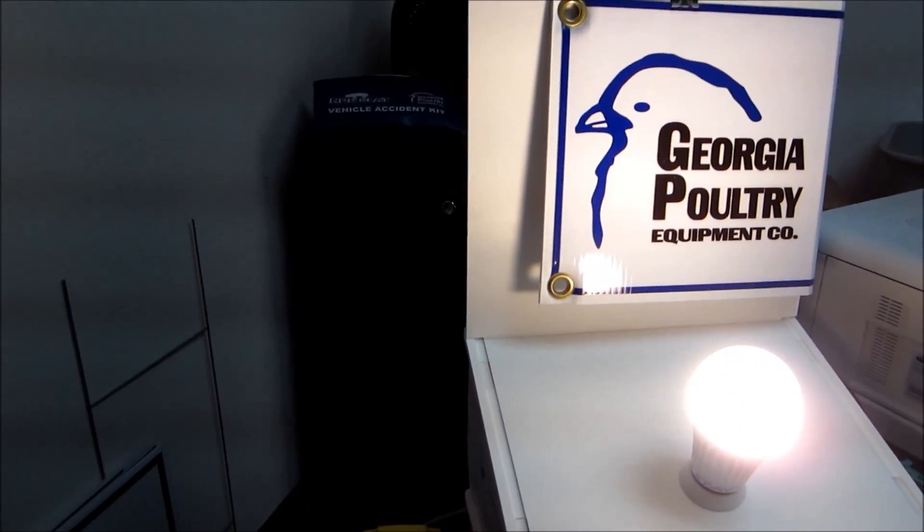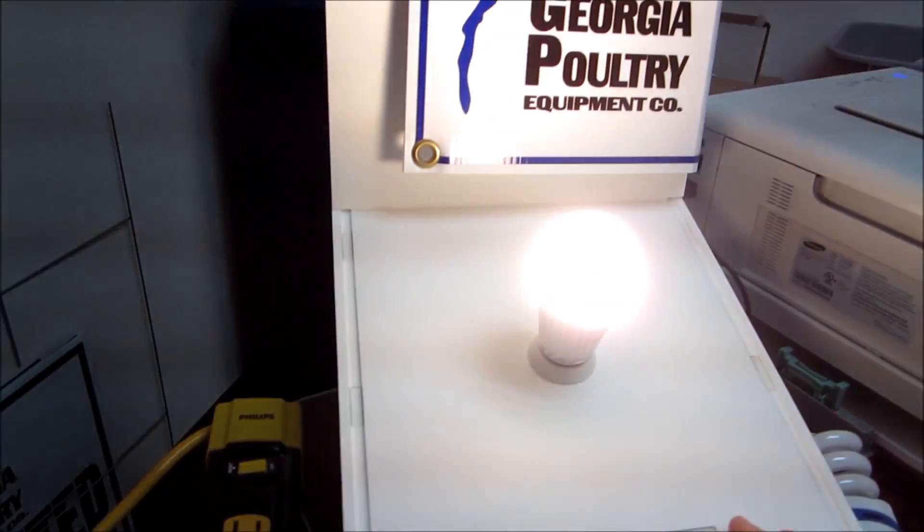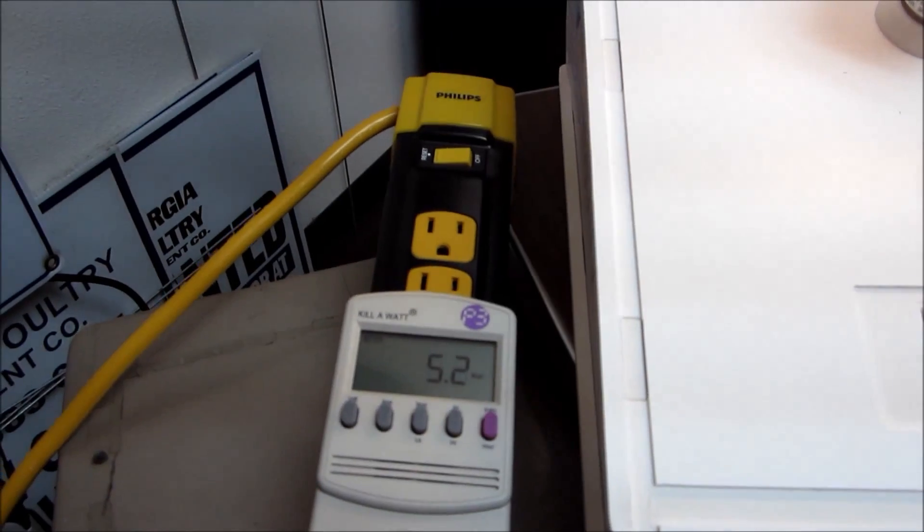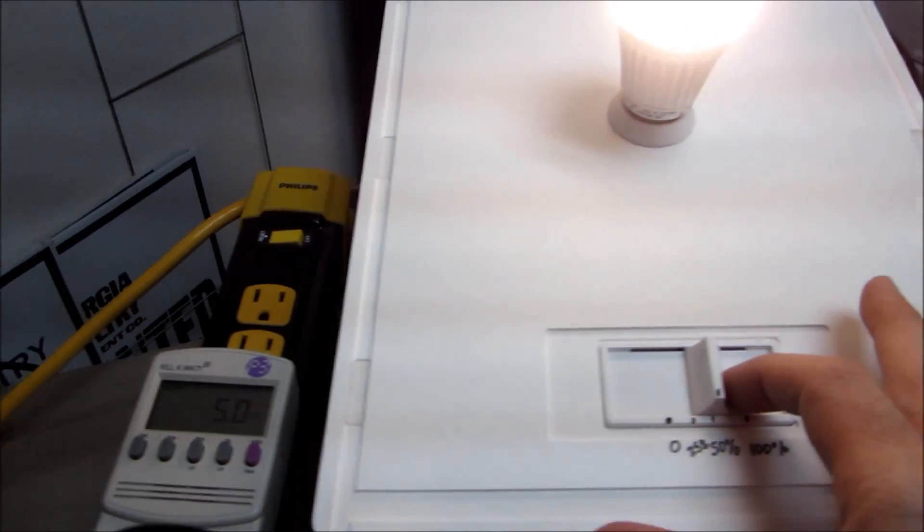But here you are, you got an 8 watt LED bulb and it is using 8 watts and then let's dim it down to 50% and at 50% you are using 5 watts whereas on the other LEDs you are in the 2 watt or less category at this level.